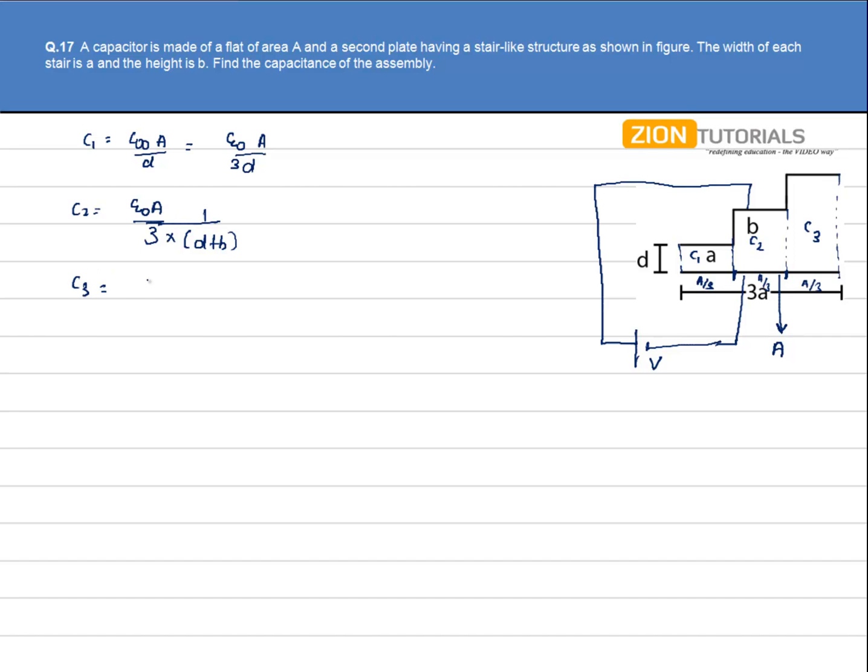Capacitance 3, that is ε₀A/3 times D plus 2B.